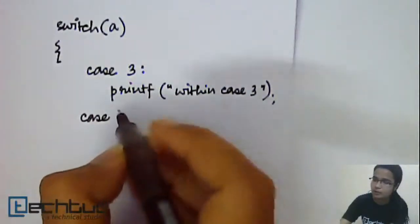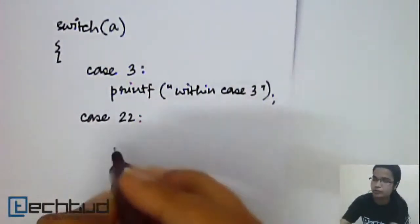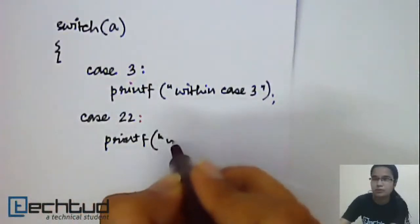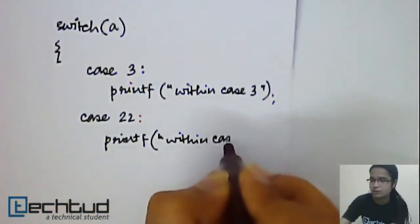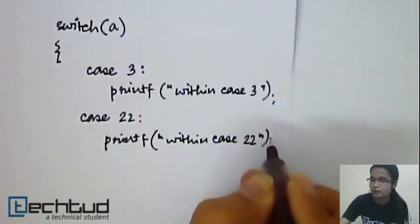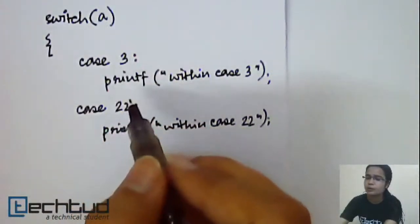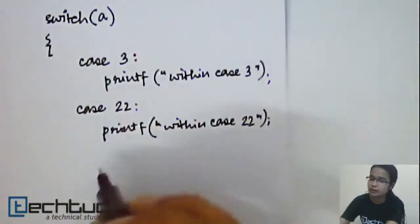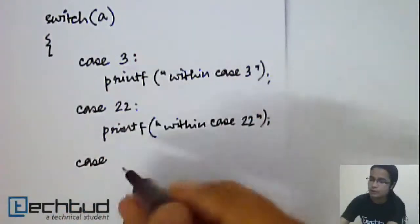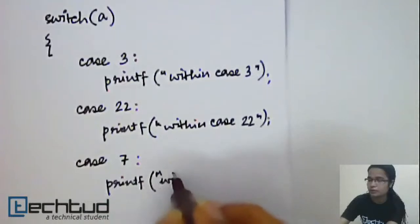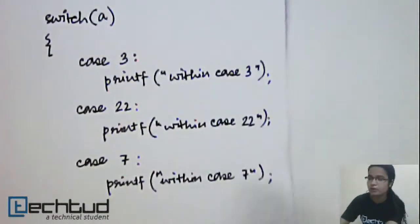Next, there may be some other case like case 22. And you write printf within case 22. Now, these values which you write as constant, this need not be in increasing order or anything like that. So you can write it as maybe some other smaller value, maybe 7, printf within case 7.